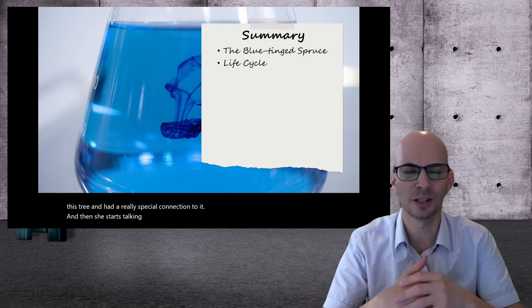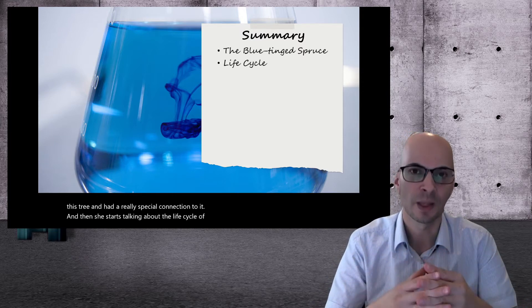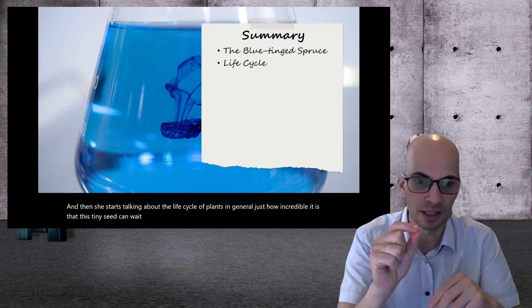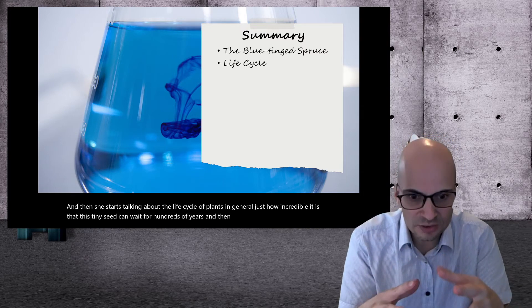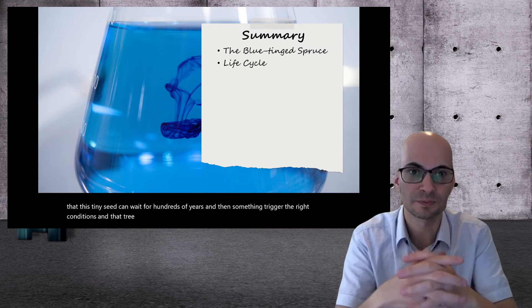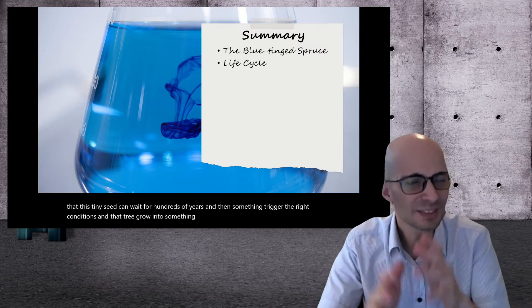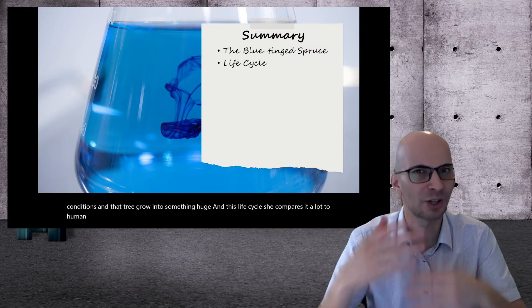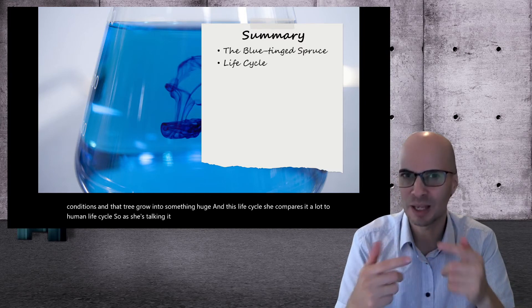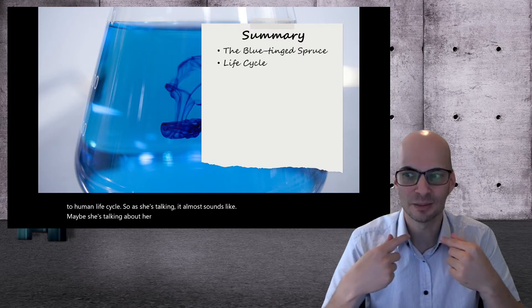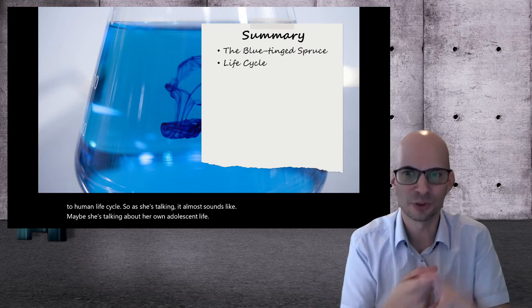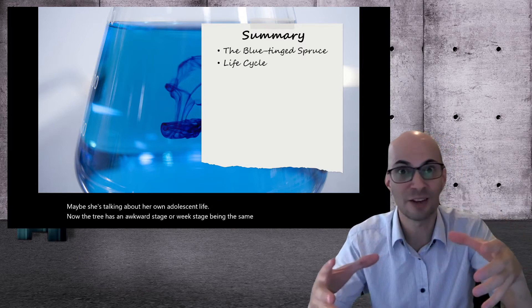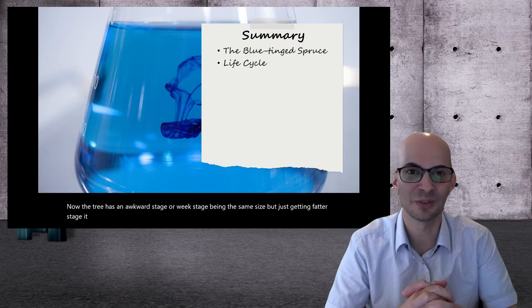And then she starts talking about the life cycle of plants in general, of just how incredible it is that this tiny seed can wait for hundreds of years and then something triggers the right conditions and that tree grows into something huge. And this life cycle, she compares it a lot to human life cycles. So as she's talking, it almost sounds like maybe she's talking about her own adolescent life. The tree has an awkward stage, a weak stage, being the same size but just getting fatter stage, all different parts of the life cycle of this tree.